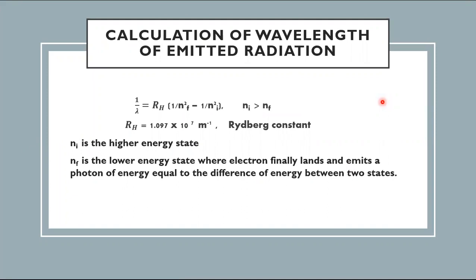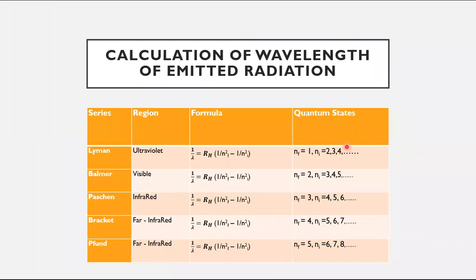For the wavelength of emitted radiation, we use the formula: 1/λ = RH (1/nf² − 1/ni²). We will derive this formula in this chapter. RH is the Rydberg constant, with a value of 1.097 × 10⁷ per meter. nf is the lower energy state into which the electron falls, and ni is the higher energy state from which the electron transitions. ni is always greater than nf.